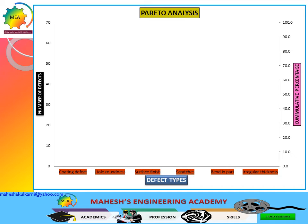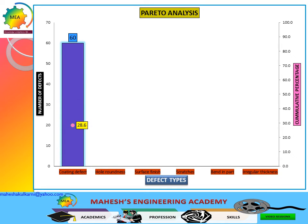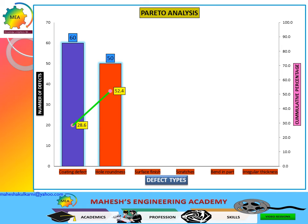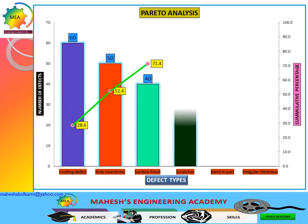Let defect type be along the x-axis, number of defects along the y-axis, and the secondary axis gives you the cumulative percentage. The cumulative percentage of the first defect — coating defect — is 28.6%, the second is hole roundness, and the third is surface finish with 40 rejections.